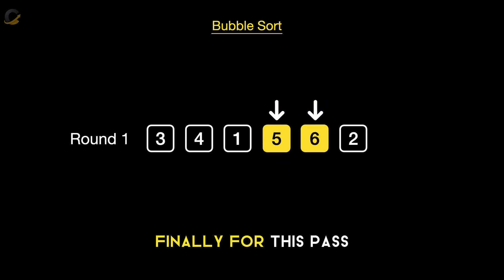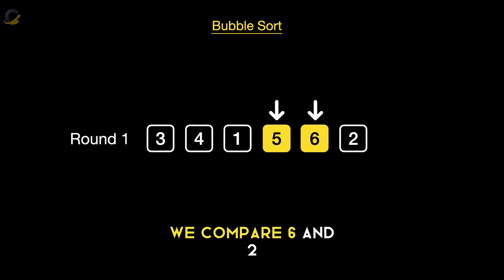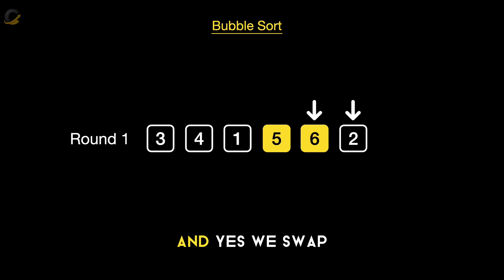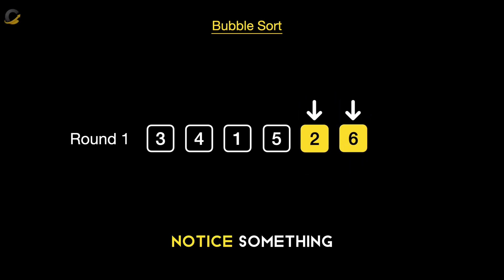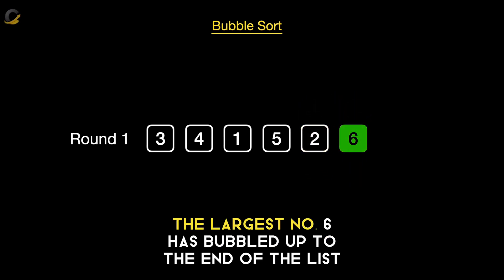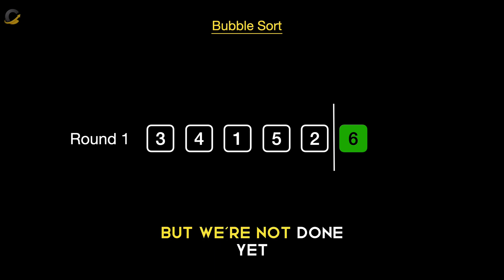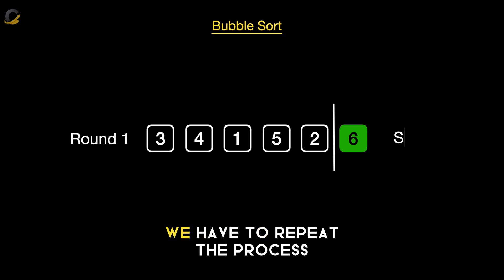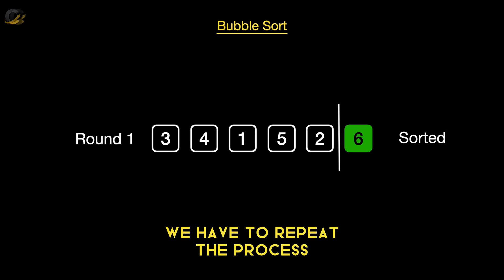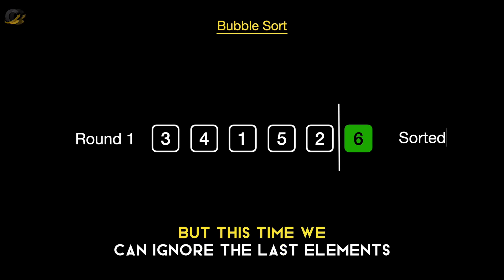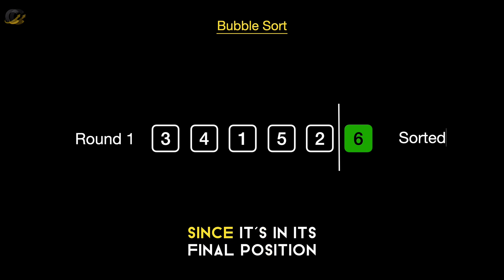Finally, for this pass, we compare 6 and 2, and yes, we swap. Notice something — the largest number, 6, has bubbled up to the end of the list. That's one round down, but we're not done yet. We have to repeat the process, but this time we can ignore the last element since it's in its final position.